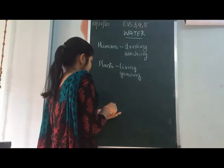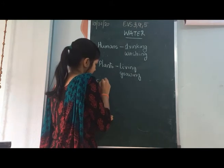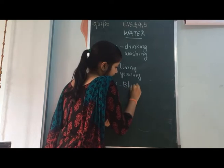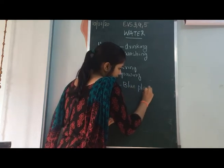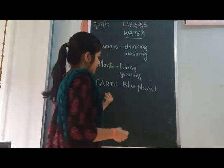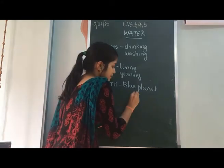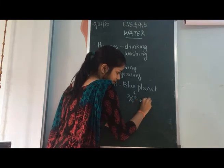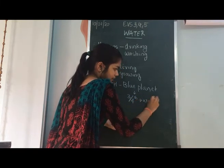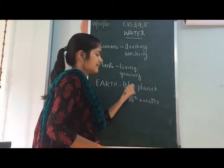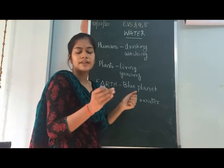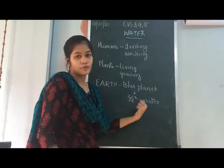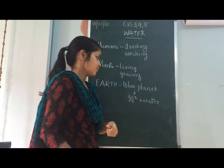The planet Earth is known as the blue planet. Earth is known as the blue planet because three-fourths of the Earth contains water. Water is blue in color, so if you look at the Earth you see mostly blue. The Earth contains three-fourths water, which is why it is called the blue planet.